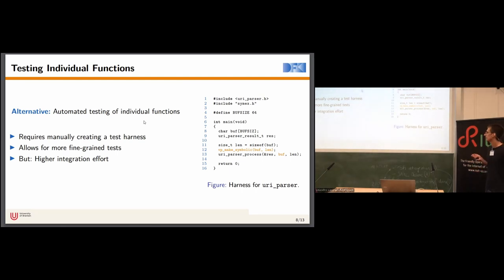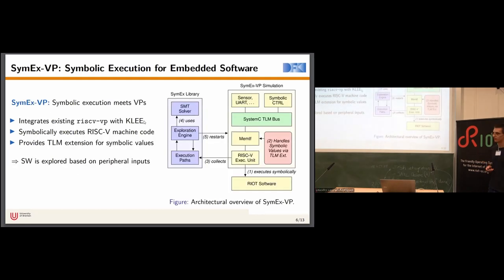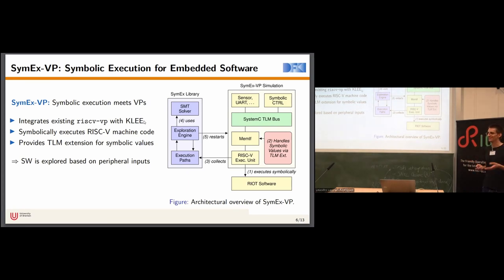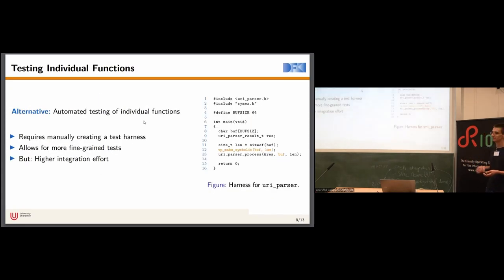How do I get symbolic values into RIOT? We have a custom peripheral called 'symbolic control' as part of SymEx-VP. The symbolic control peripheral allows the software to request, say, 10 symbolic bytes, and it returns those 10 symbolic bytes. You need only about a 50-line C file to communicate with the symbolic control peripheral — that's what the vp_make_symbolic function does. So the integration effort is very low.